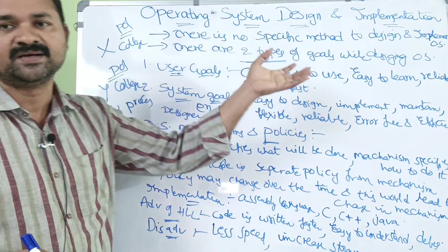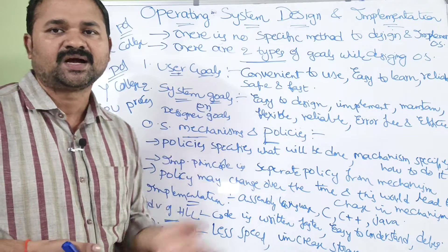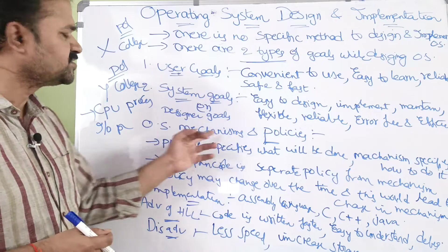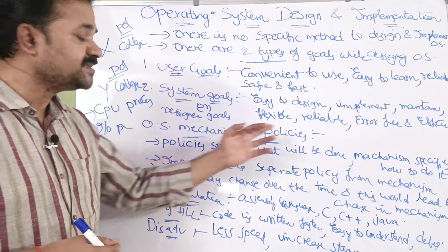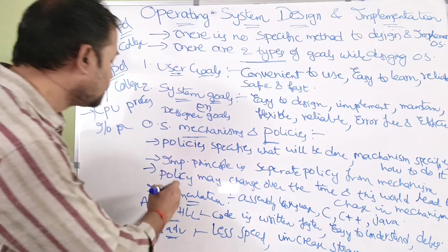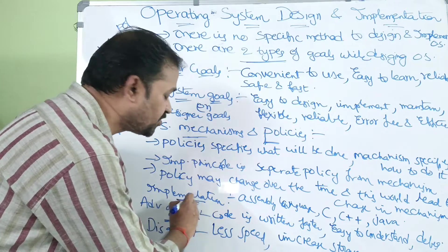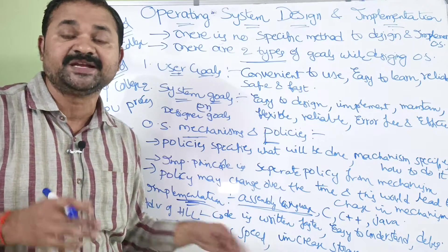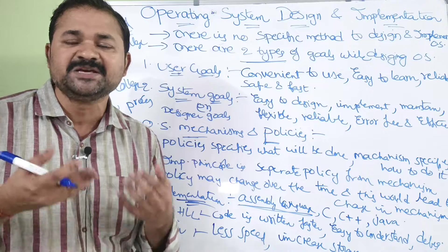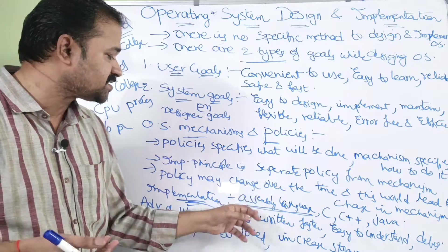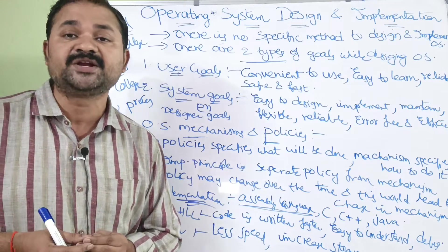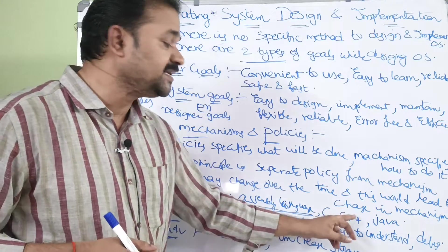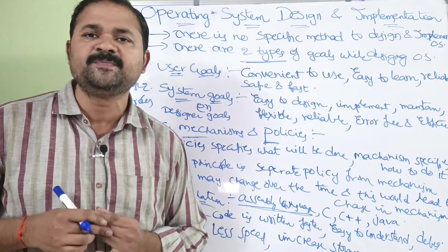This is about designing. Till now we have seen about design — two types of goals, no specific method to implement those goals, and the use of software engineering principles: mechanisms and policies. Now let us see about how to implement the operating system. In the olden days, assembly level languages were used to implement the operating system. But nowadays, we are using high level programming languages like C, C++, and Java in order to implement the operating system.